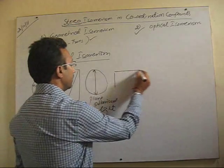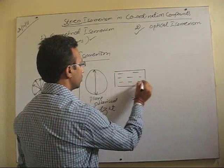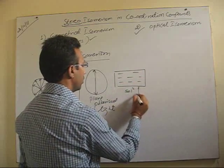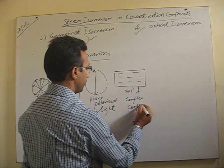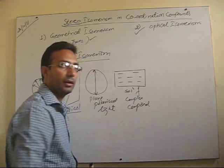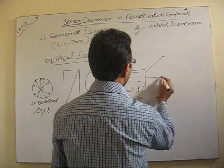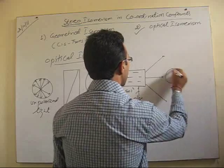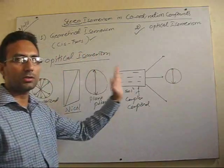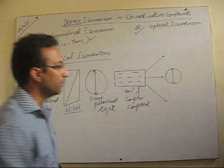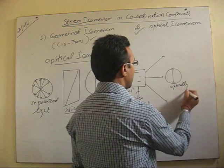Optical isomerism is the behavior of a compound's solution towards this plane polarized light. When plane polarized light passes through the solution of a complex compound, there can be three cases. In the first case, the plane polarized light passes through without any change — its plane remains the same. This substance is optically inactive.